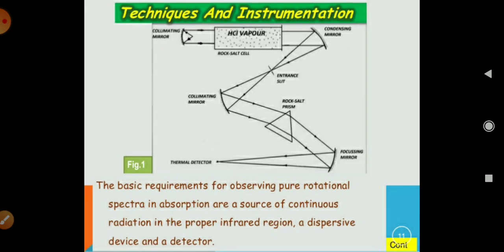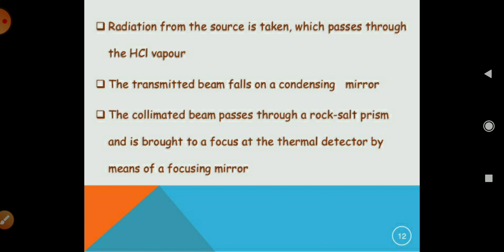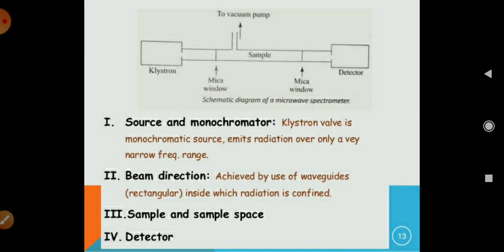This is the diagram of apparatus to identify the rotational spectra in absorption. This is the source containing radiation in the proper infrared region, the dispersive devices, and the detector. The radiation from the source passes through the HCl vapor. The transmitted beam falls on the condenser mirror and the collimated beam passes through the rock salt prism and is brought to a focus at the thermal detector by means of a focusing mirror.